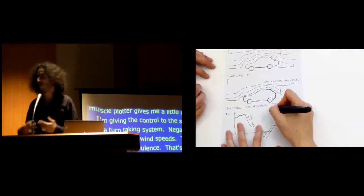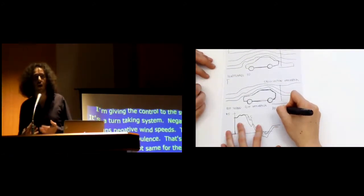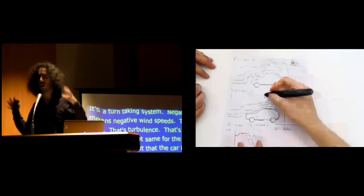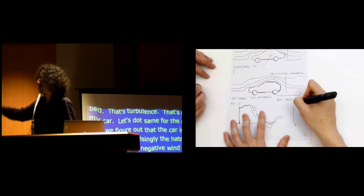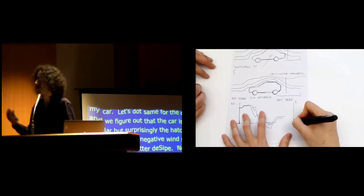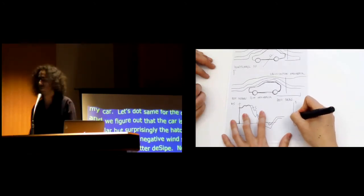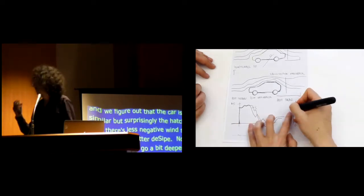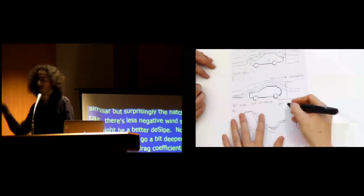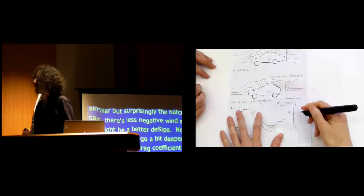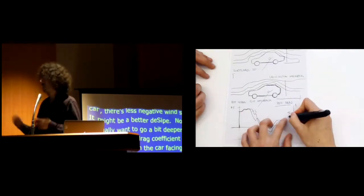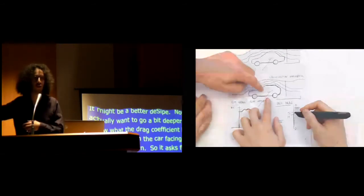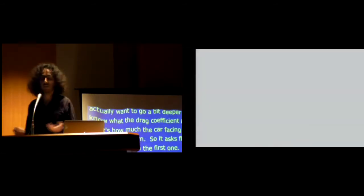I say plot the set on, which was what I wrote on top and I'm going to find out where the plot starts. Starts on the zero axis right there and on the y axis, it starts here. Muscleplotter gives me a little nudge. Now I just have to drag along and I'm giving control to the system. It's kind of a turn-taking system. Here's the xyplot. Negative means negative wind speeds. That's bad. That's turbulence. That's dragging my car. All right, let's do the same for the other car and we figure out that the curve is really similar but turns out that, surprisingly, the hatchback car, although it has a weird shape, has less negative wind speeds. So it might actually be a better design.